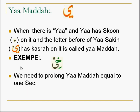For Ya Madd, when there is a Ya sakin, we check the letter before it. If the letter before Ya sakin has a kasra, it will be Ya Madd. We apply the same rule — we prolong the letter equal to one Alif or one second. For example: 'Khii', 'Nii', 'Lii' — like in 'Tarmihim'.